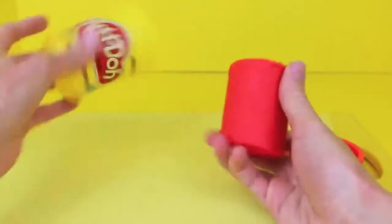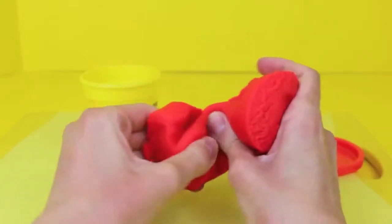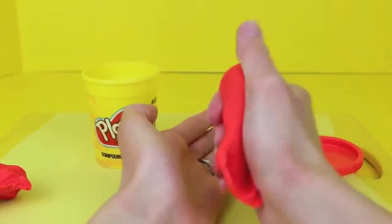To start I'm going to use red Play-Doh to make the hot dog piece. I even have a brand new can of Play-Doh. Yay! Nice and fresh.